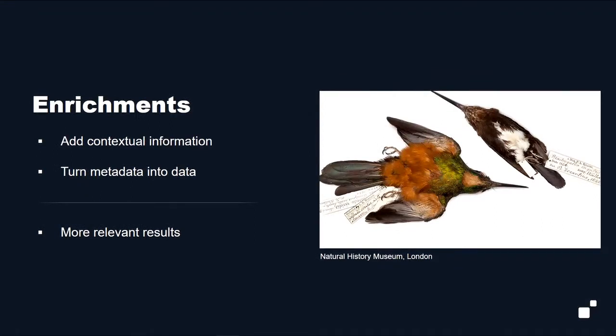Think about enrichments. The whole point of enrichments is to apply the principle of universality with intent — to turn metadata into data so you can ask questions about it, and so you can understand the answers you get back more fully. By applying these enrichments, that's what search gets out of the Data Hub: the ability to ask these questions and to get answers that give the full context. More relevant results.